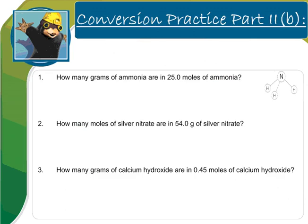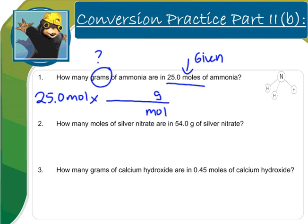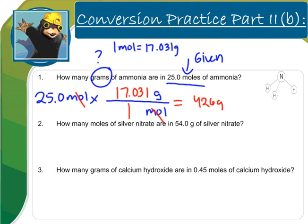I can then use these numbers in mole conversion problems that include compounds. The first one reads: how many grams of ammonia are in 25 moles of ammonia? My given is 25 moles of ammonia, and I want to convert to grams. Moles need to be on the bottom and grams on top. From the previous page, we found that one mole of ammonia equals 17.031 grams, so I plug that in as a conversion factor. Moles cancel, and I find this equals 426 grams of ammonia.